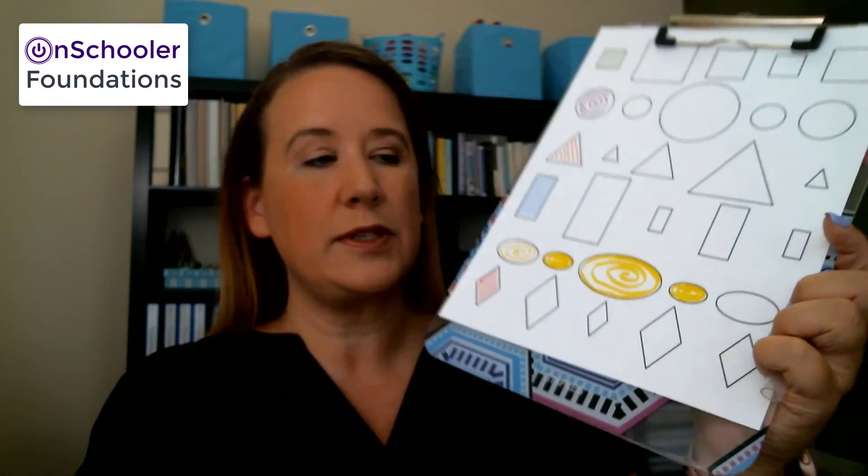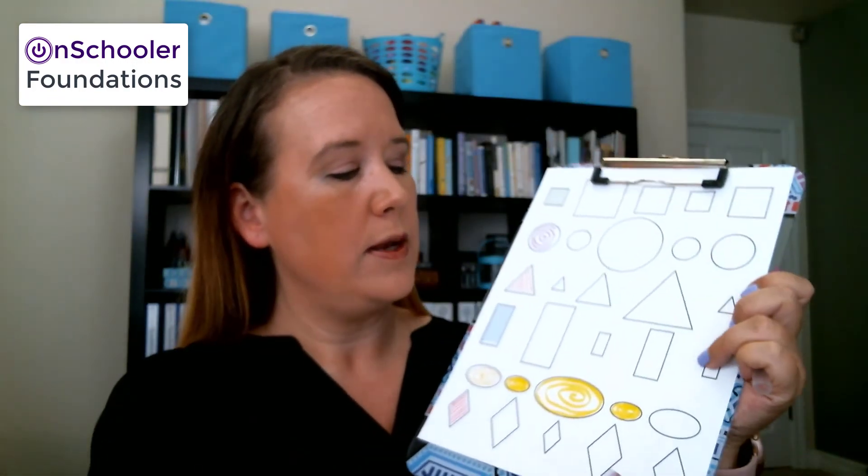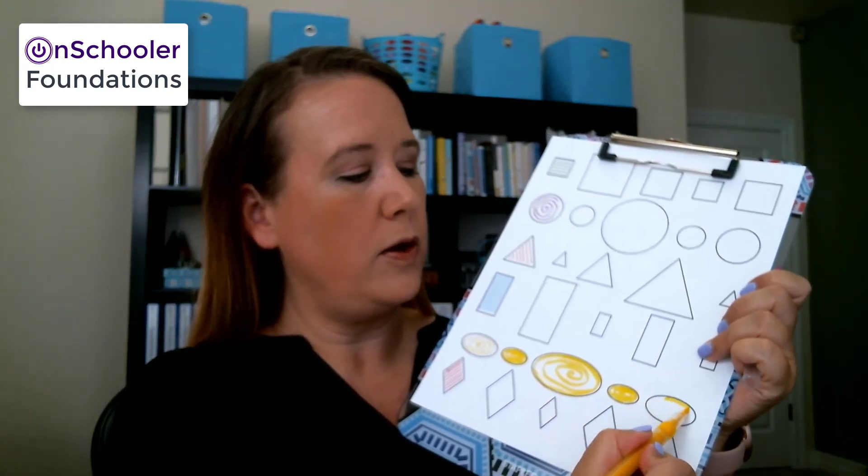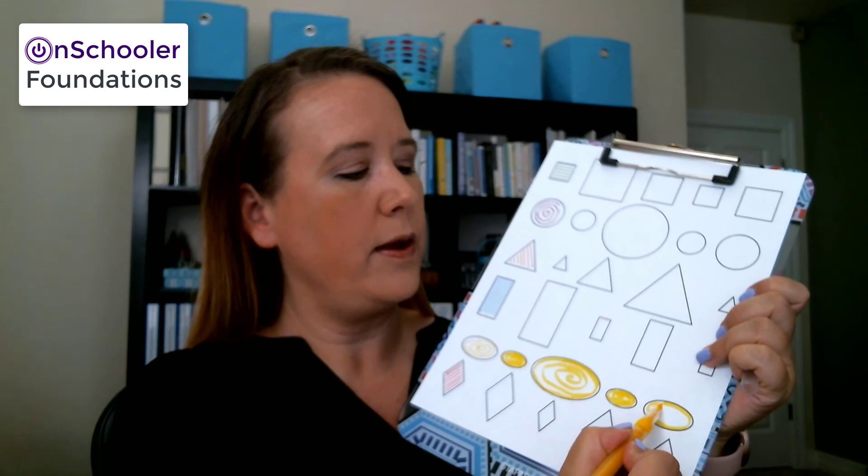All right, and now we have a medium sized circle or oval. Start at the top, go to the right, all the way around.